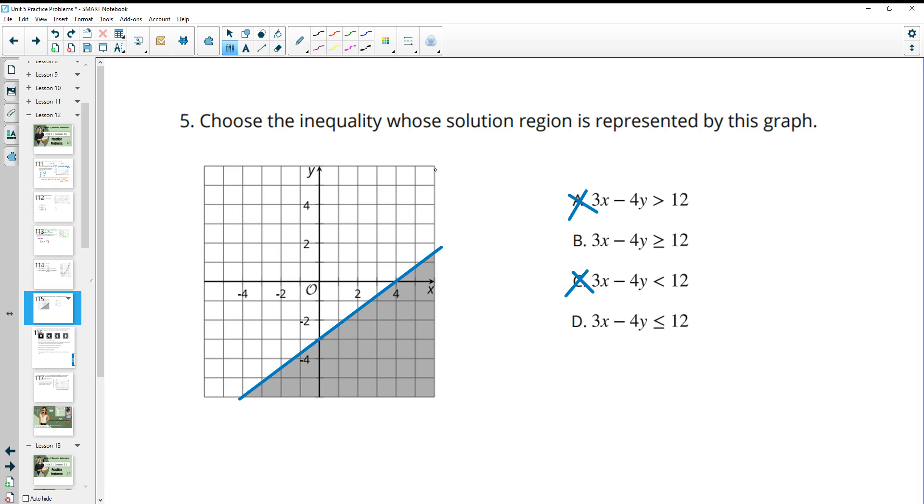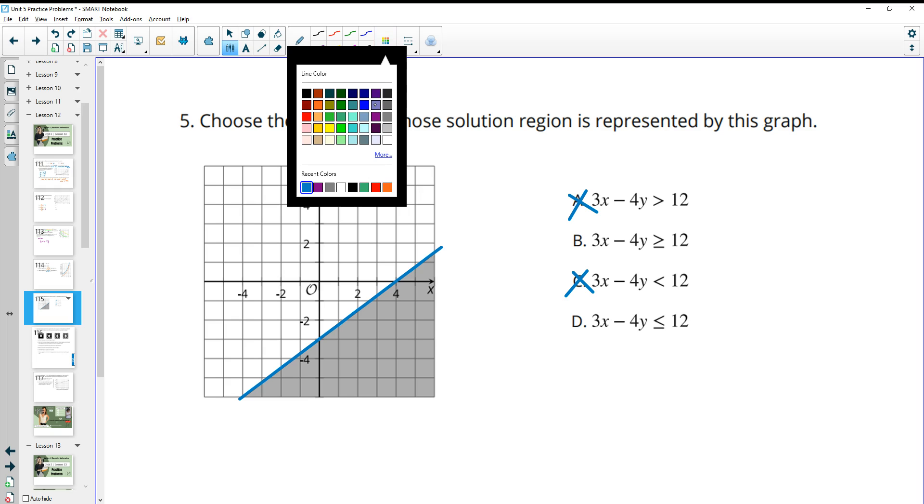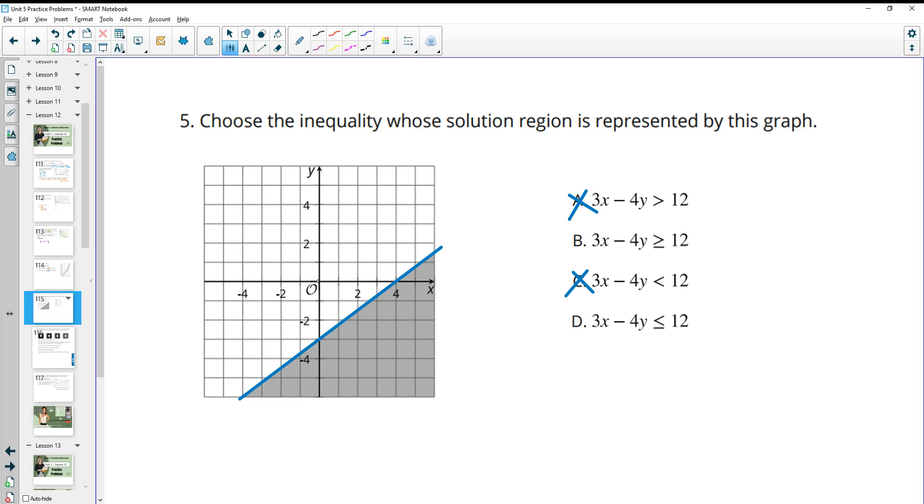So now we just need to figure out which of these B or D is the solution. You can go about this a bunch of different ways. I'm just going to actually plug in the point (0,0) because (0,0) is not in our solution.